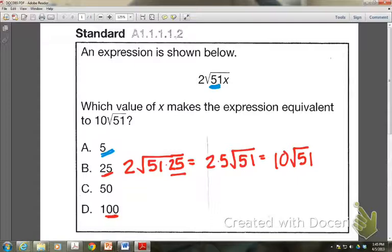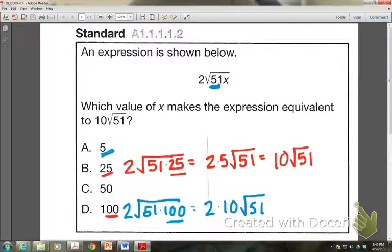Let me show you, we said 100 was another choice. Let me show you that and kind of go over why it doesn't work. If when you substitute the 100 in for x, we do 51 times 100, we can take the square root of 100. Square root of 100 is 10. That 10 would pop out with the 2 to be multiplied and the 51 would stay underneath. That problem, that would then simplify to 20 square roots of 51, which is not what we want up here in the problem.